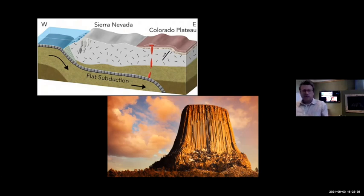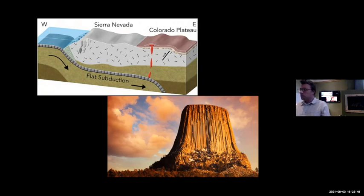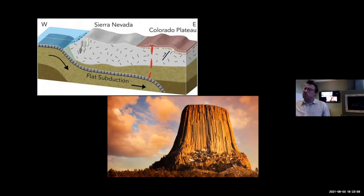This low-angle subduction gave rise to the Laramide orogeny in the U.S. The name comes from the Laramie Mountains. A lot of the mountains in Wyoming are related to this Laramide orogeny — the Wind River Range, the Bighorn Mountains, the Medicine Bow Mountains, the Laramie Range — all created during the Laramide orogeny because of this low-angle subduction.